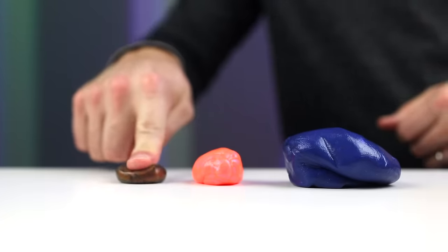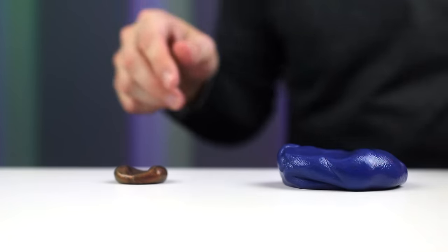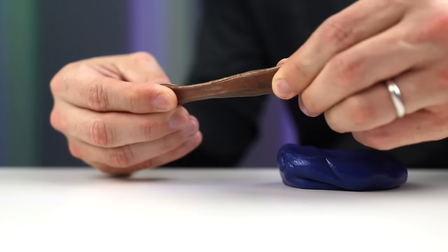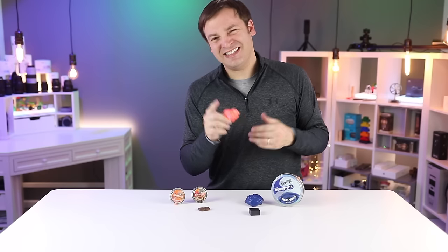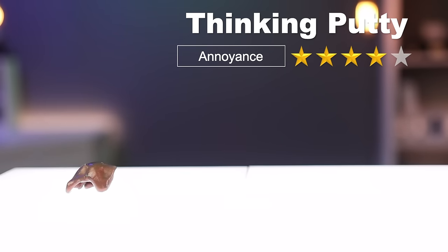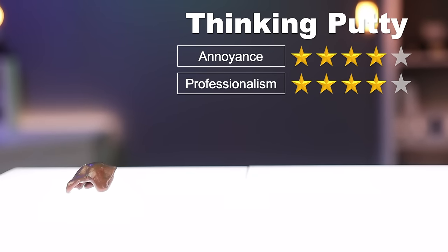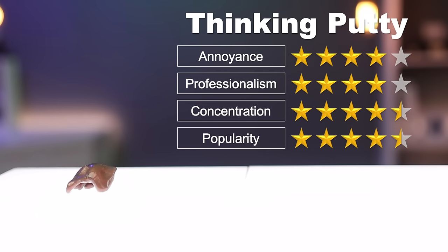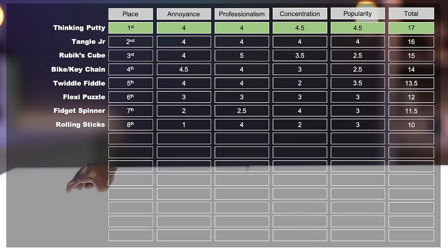With endless squishiness, shapes, bounciness and even sometimes magnetic properties, thinking putty is a popular option for many as long as it doesn't get stuck in the carpet. Since it's quiet, it gets four stars for annoyance, four stars for professionalism, four and a half stars for concentration and four and a half stars for popularity, landing it right at the top of the list.